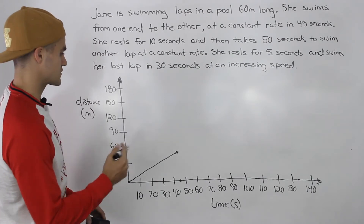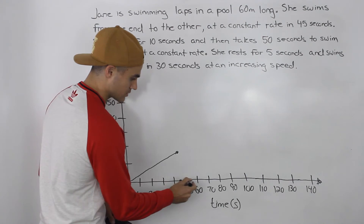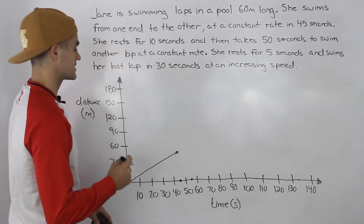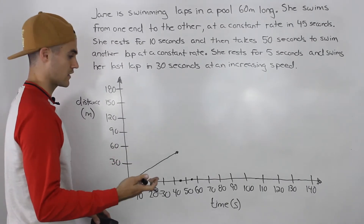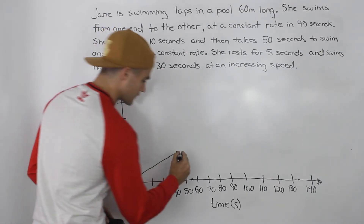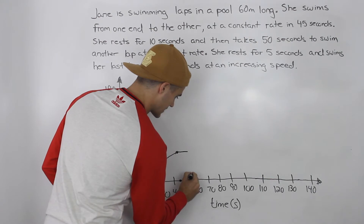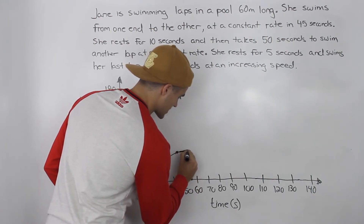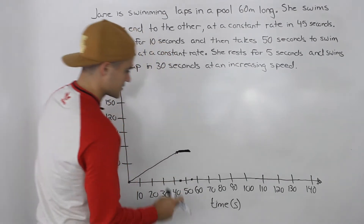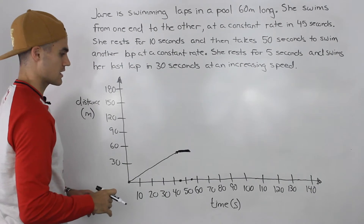Then she rests for 10 seconds — from the 45 second mark to the 55 second mark. Since she's resting, she isn't moving. To represent an object not moving on a distance versus time graph, you use a horizontal line. That horizontal line goes to the 55 second mark, representing her 10 seconds of rest.